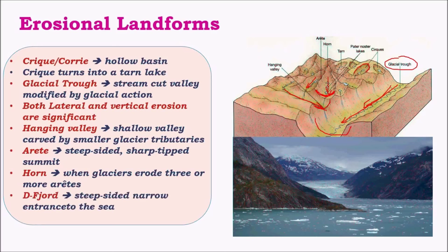A fjord is a structure similar to a river valley, except that all the glacial debris flows through this valley into the sea. These structures are found only in a few countries like New Zealand and Scandinavian nations where glacial action is important, and they are rare in Antarctic, Arctic, and Greenland regions.